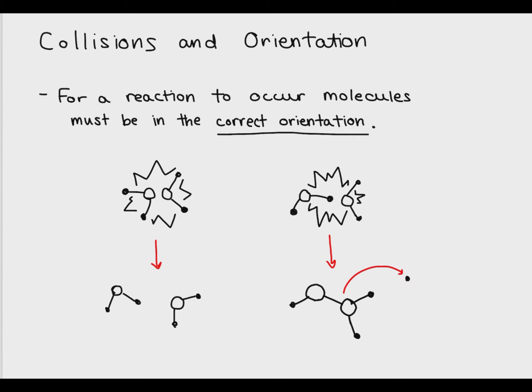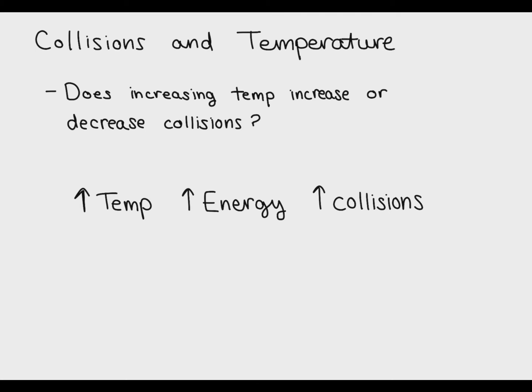Now this is where temperature and concentration come in. There are some things we can do to increase the likelihood that the molecules will successfully interact. One of them is to increase the temperature. An increase in temperature causes the molecules to move around more and faster and increases the likelihood that they'll collide.